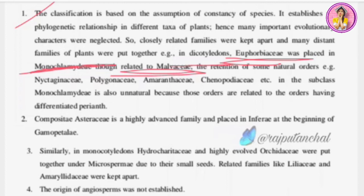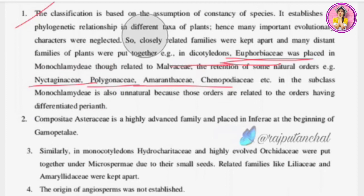Demerit two: the subclass Monochlamydae is entirely unnatural because these orders are related to orders having differentiated perianths. For example, Euphorbiaceae was placed in Monochlamydae even though it resembles Malvaceae. Euphorbiaceae should have been kept with Malvaceae, but the mistake was that Malvaceae was placed earlier and Euphorbiaceae was placed much later — despite their evolutionary belief, this error occurred.